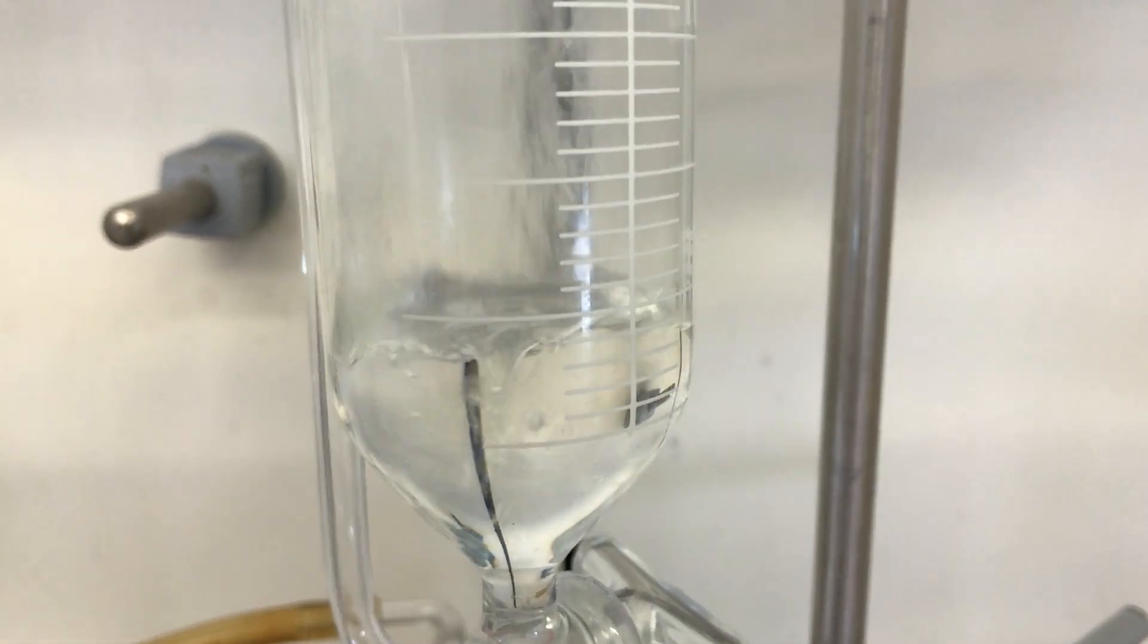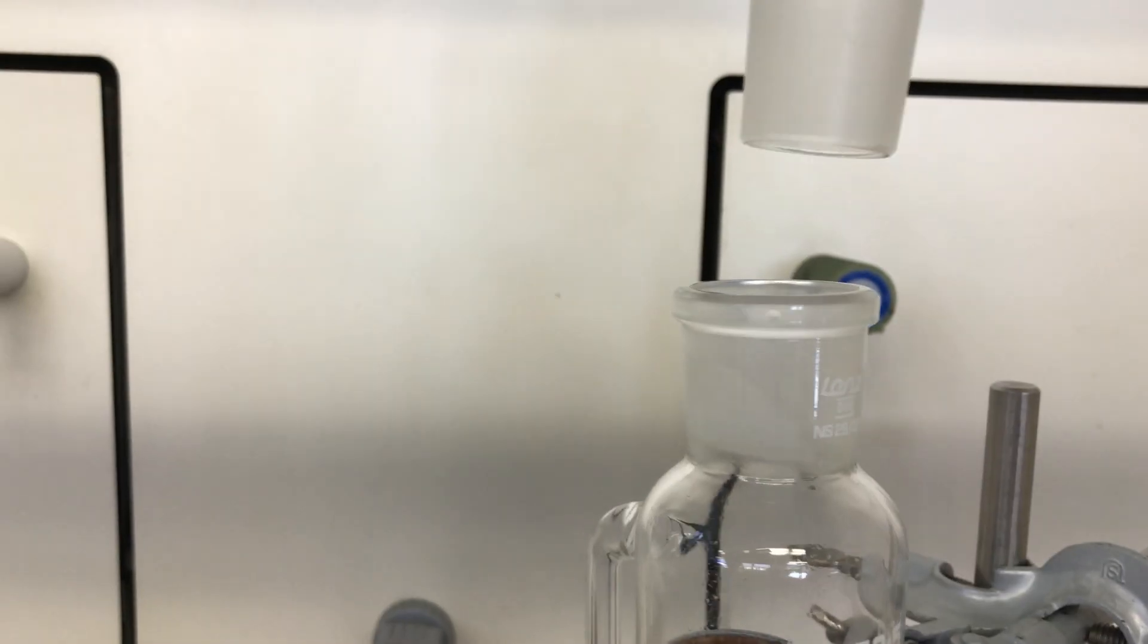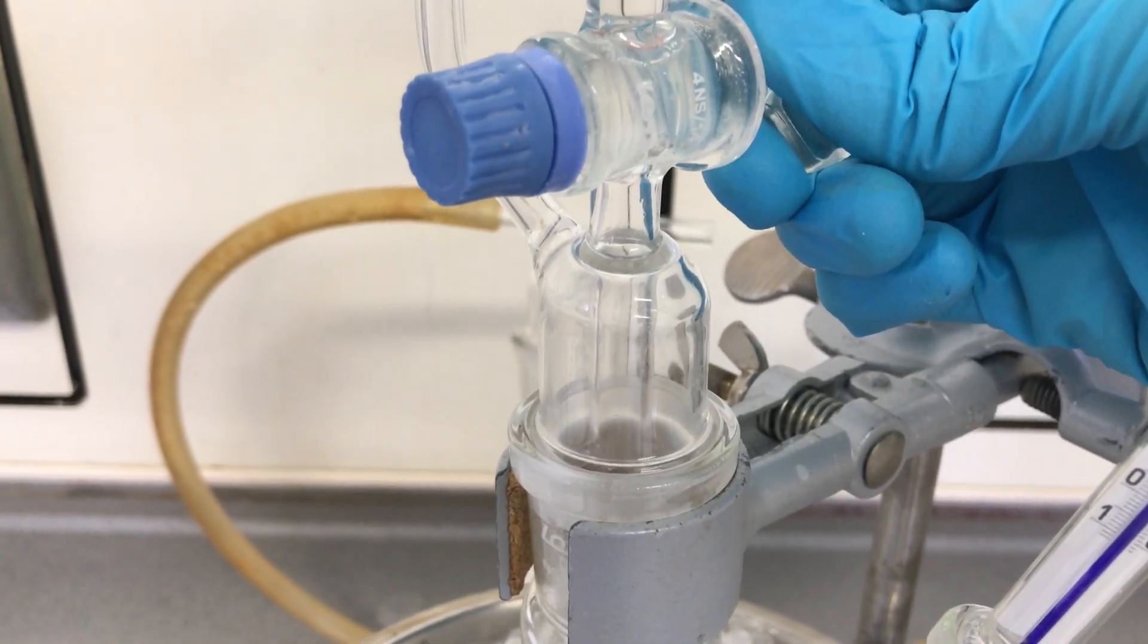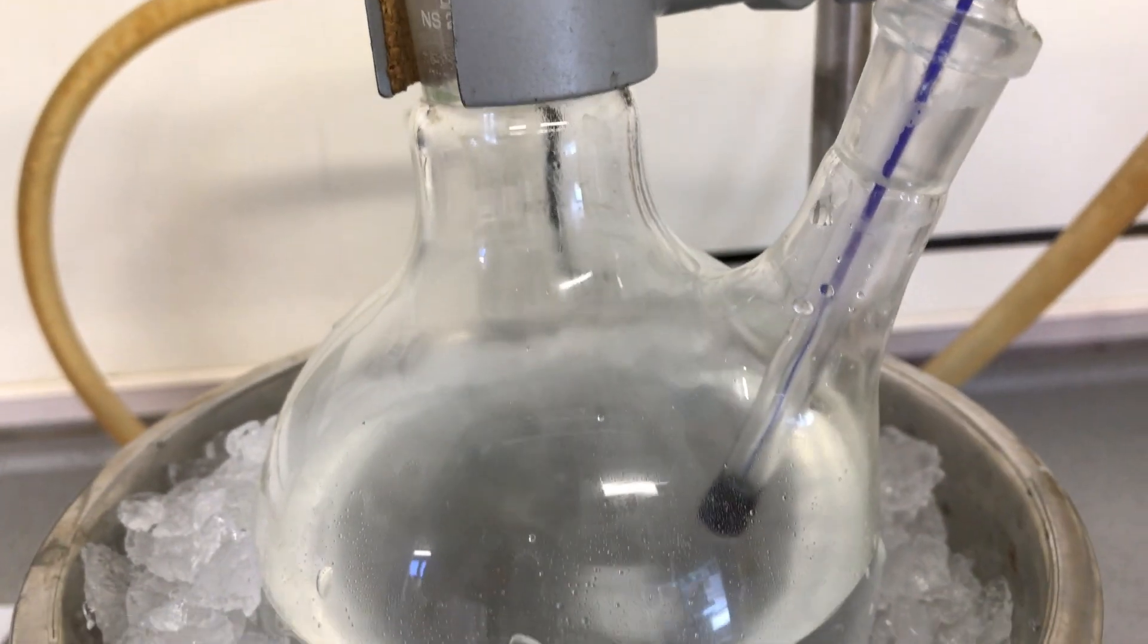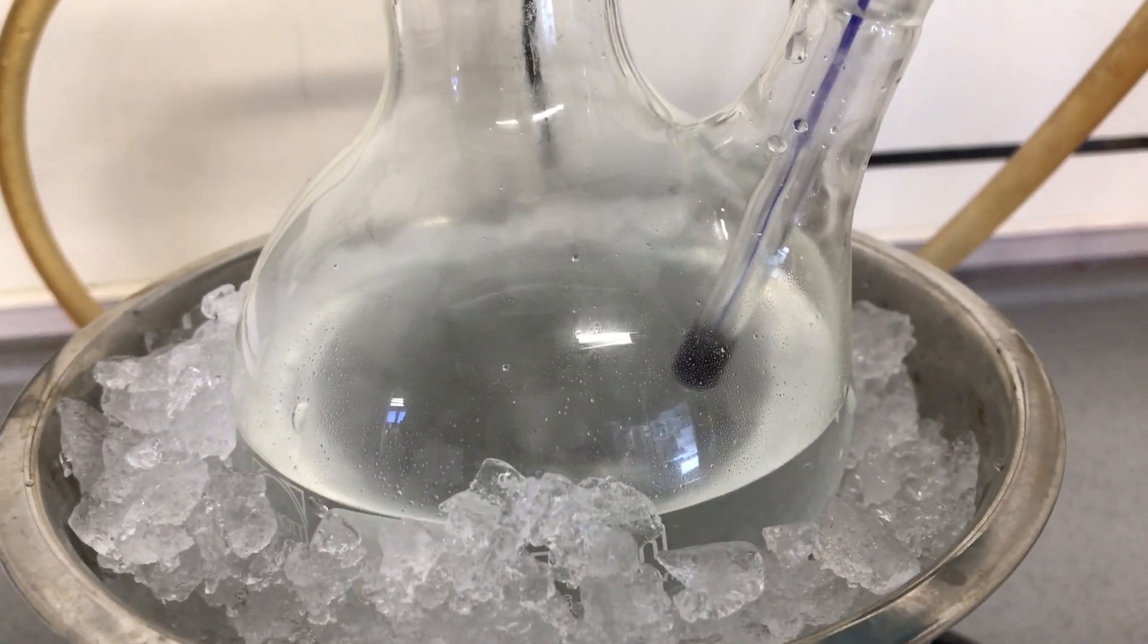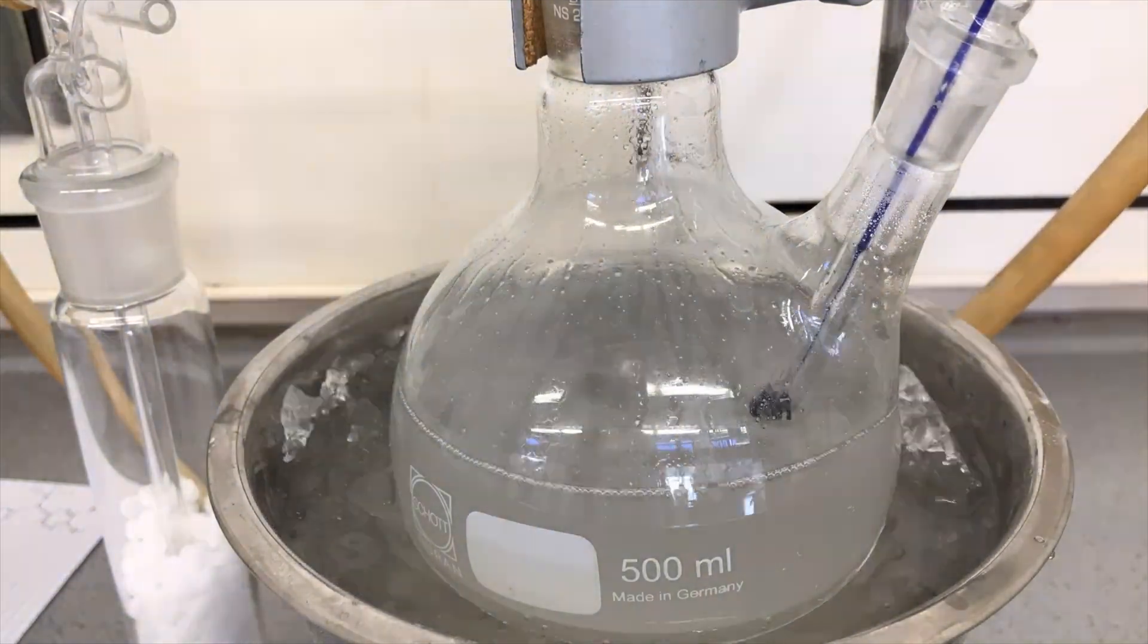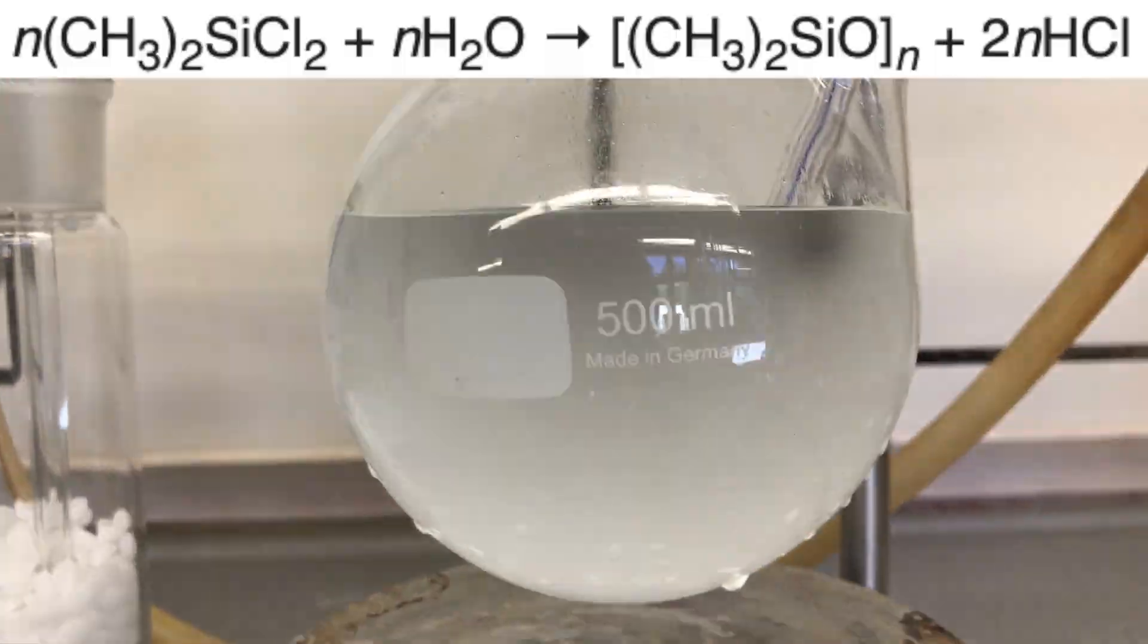The reagent was quickly transferred to this 250ml addition funnel. I already told you that this reagent hydrolyzes when it comes into contact with the moisture in the air. Well, our next step is to hydrolyze it. So it was slowly dripped into the water while keeping the temperature below 40 degrees celsius.